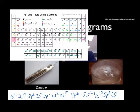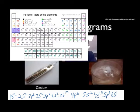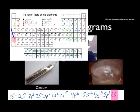Cesium has an electron configuration of 1s2, 2s2, 2p6, 3s2, 3p6, 4s2, 3d10, 4p6, 5s2, 4d10, 5p6, 6s1. It has one valence electron.